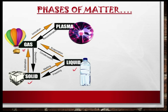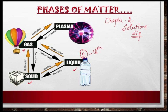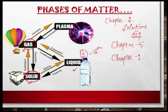In chapter number 2 of class 12, we study about solutions, which is basically more of liquid state. In chapter number 5 of class 11, we talk about gaseous state — that chapter's name was states of matter, and three-fourths of it was about gaseous state and its properties. The remaining part — solid state — is basically your chapter number 1 in class 12.